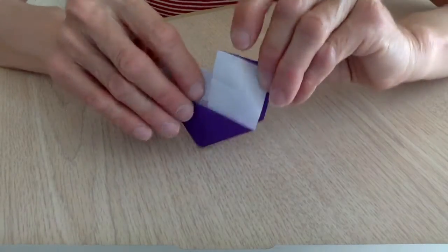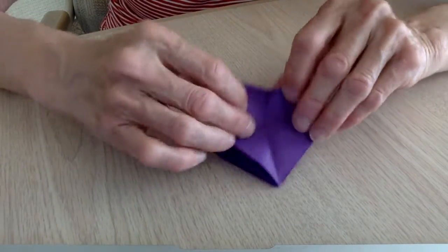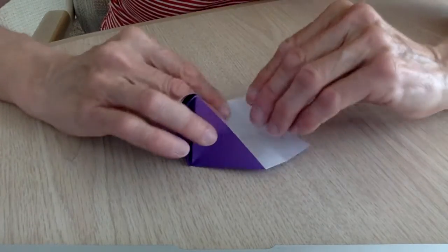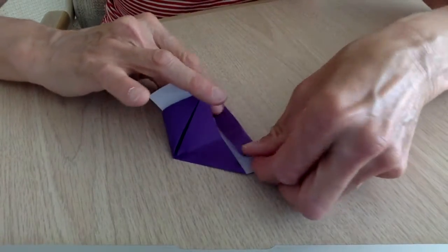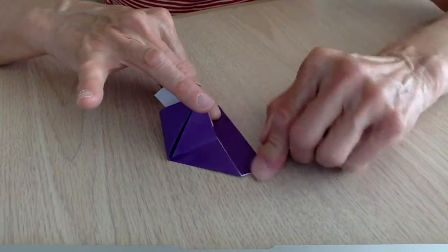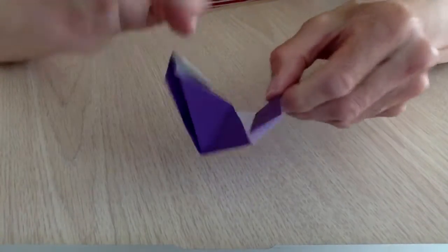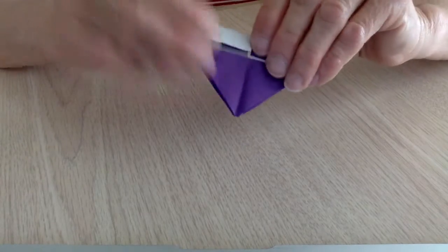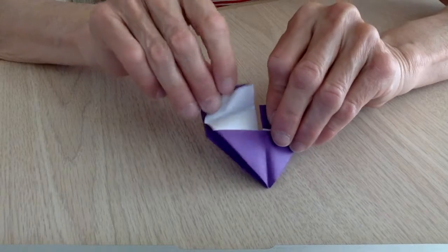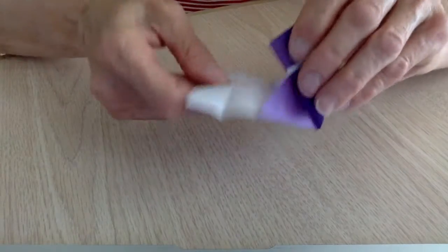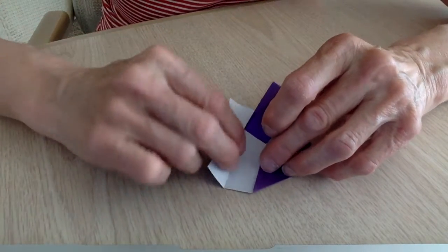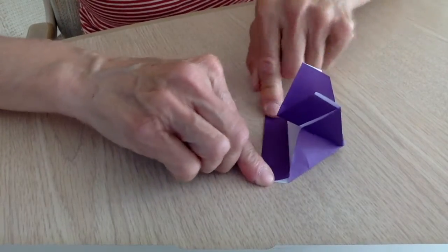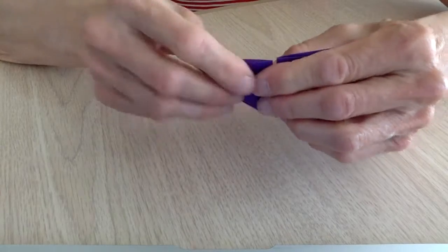And then what you need to do is open on one side, open it up, and fold it down on the crease like this. And then take it backwards on this side, open it up, put it down, fold it inside on the crease, and then bring it backwards.